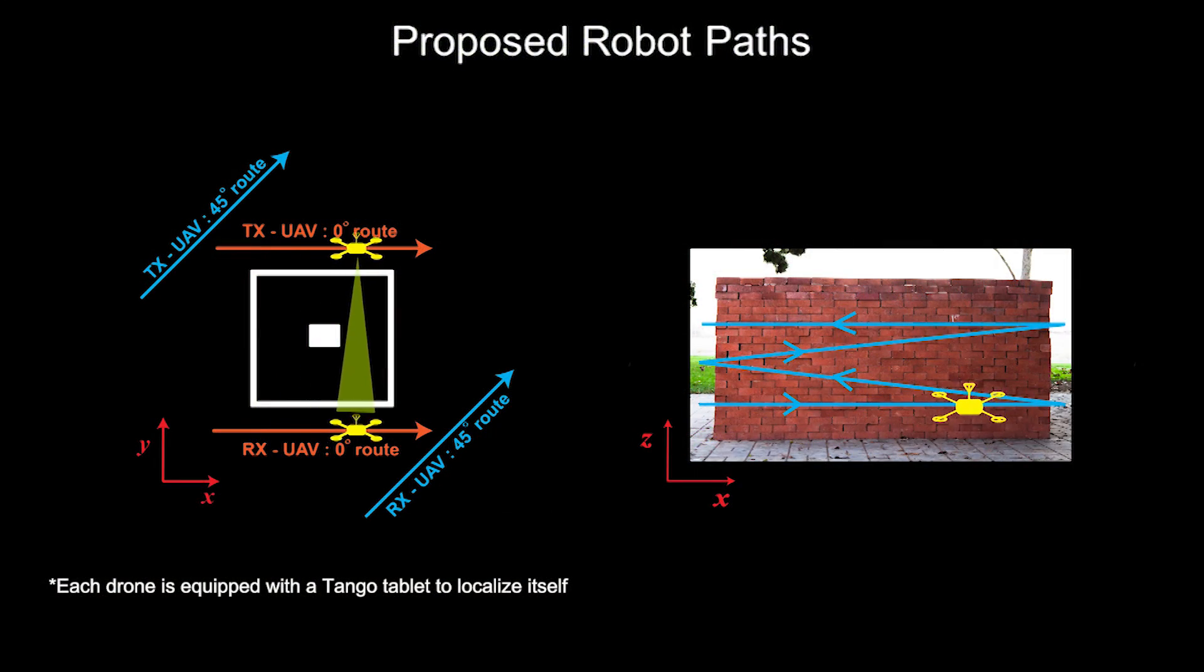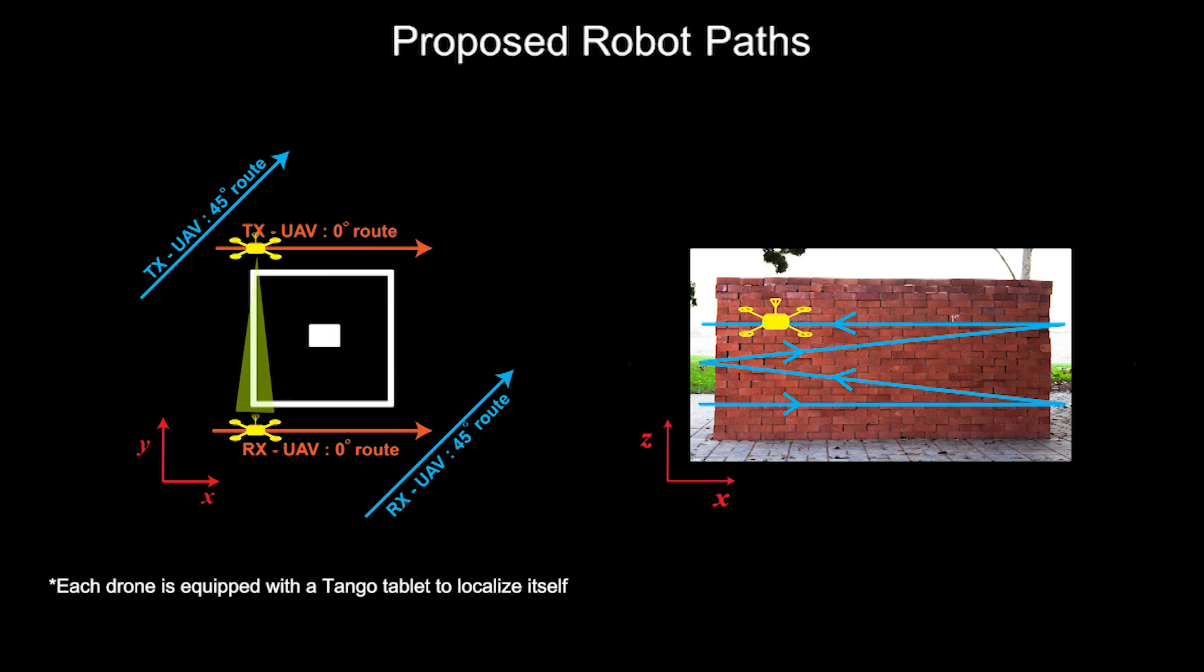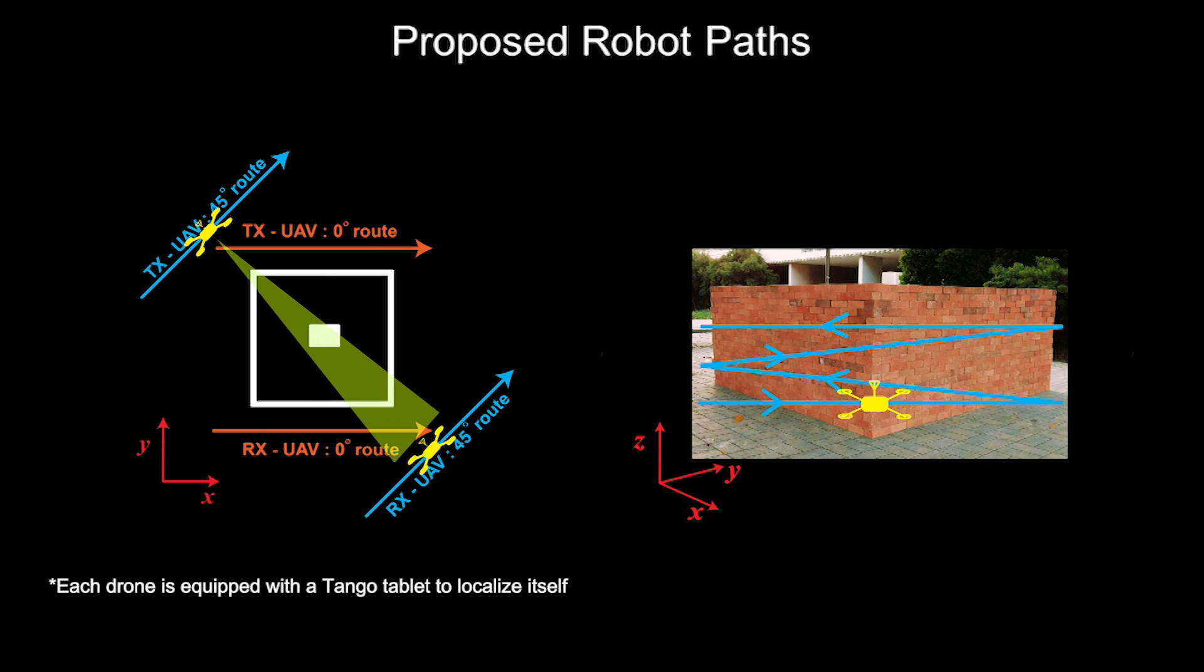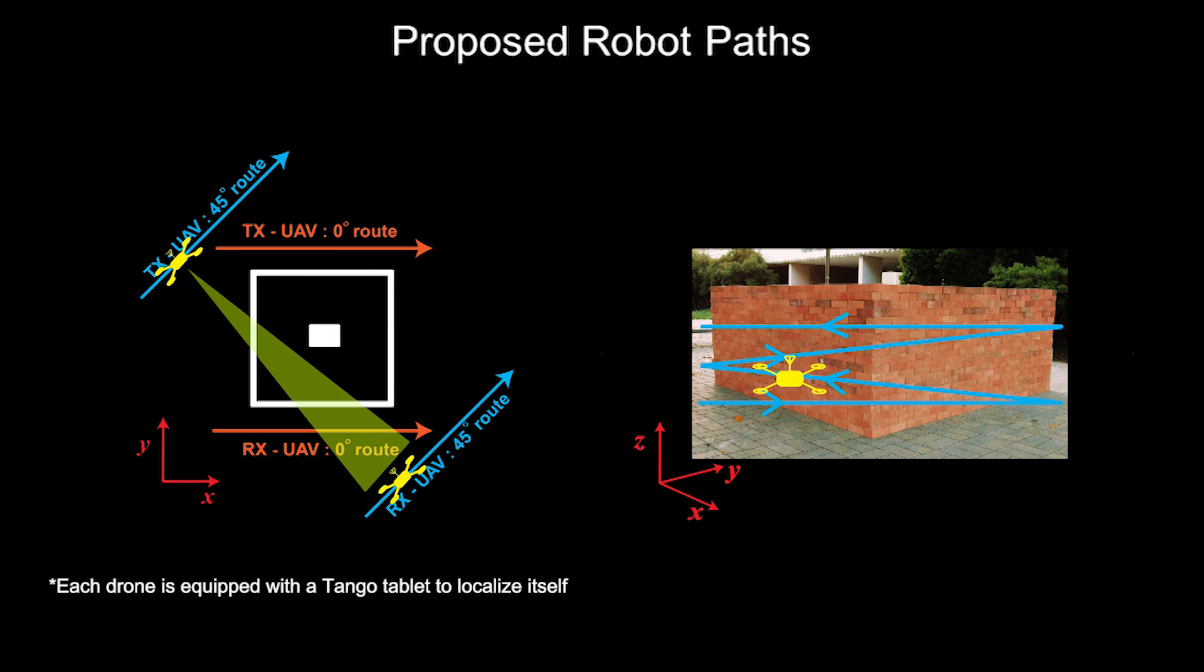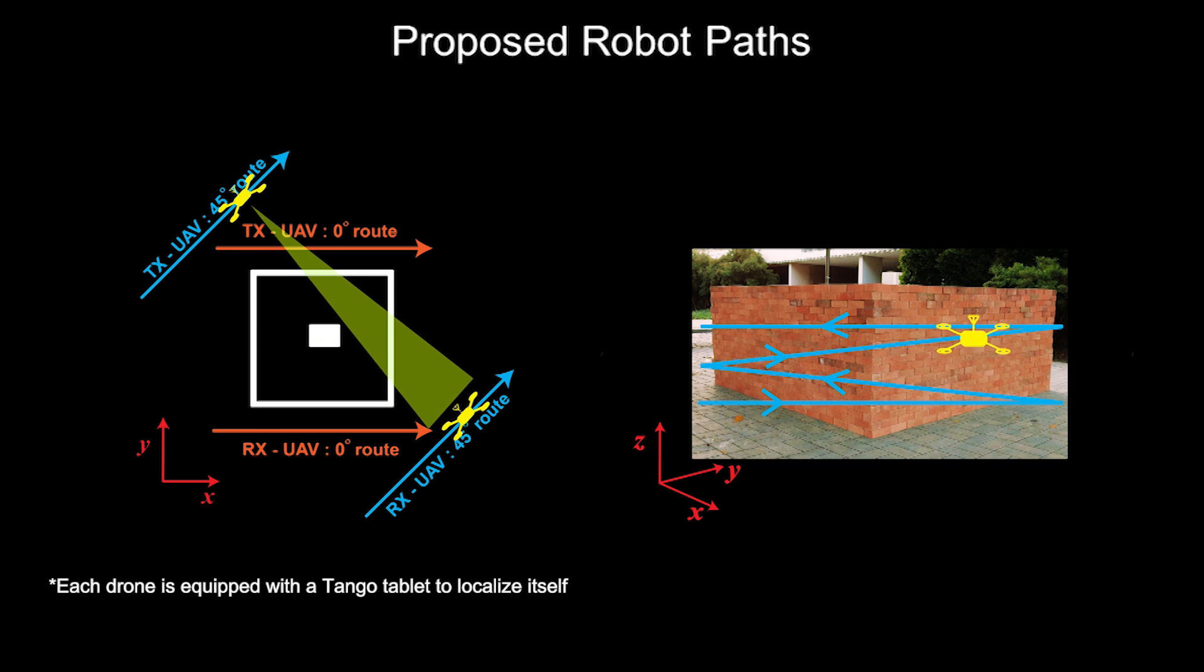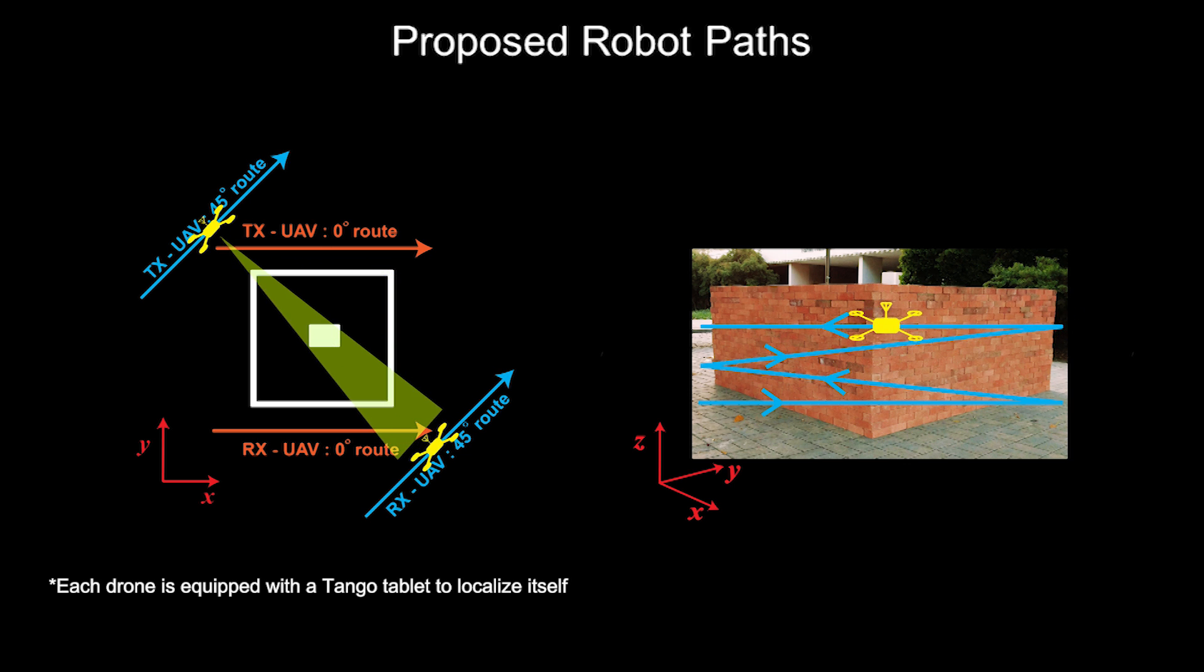We have proposed robot routes that can capture the spatial variations as much as possible while maintaining the efficiency of the operation. More specifically, our proposed routes are a combination of sloped routes to capture the variations in the z-direction as well as horizontal routes to capture the changes in the x-y plane.